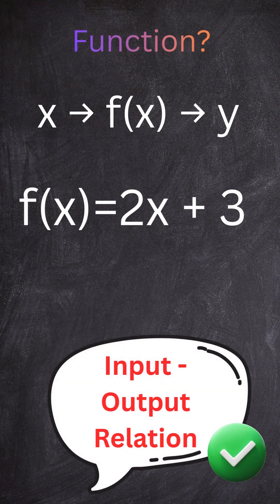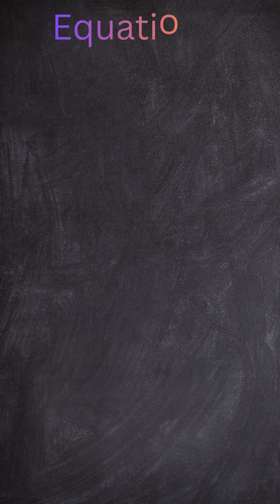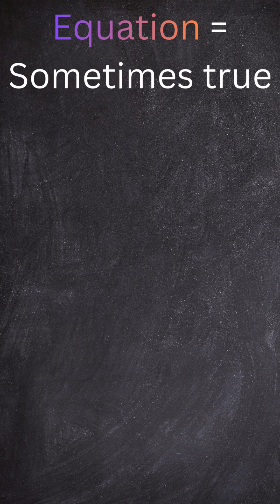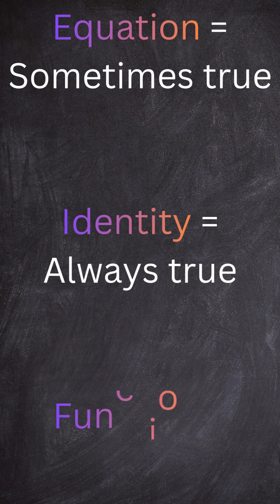So remember, equation, sometimes true. Identity, always true. Function, a rule that maps inputs to outputs. Now you'll never mix them up again.